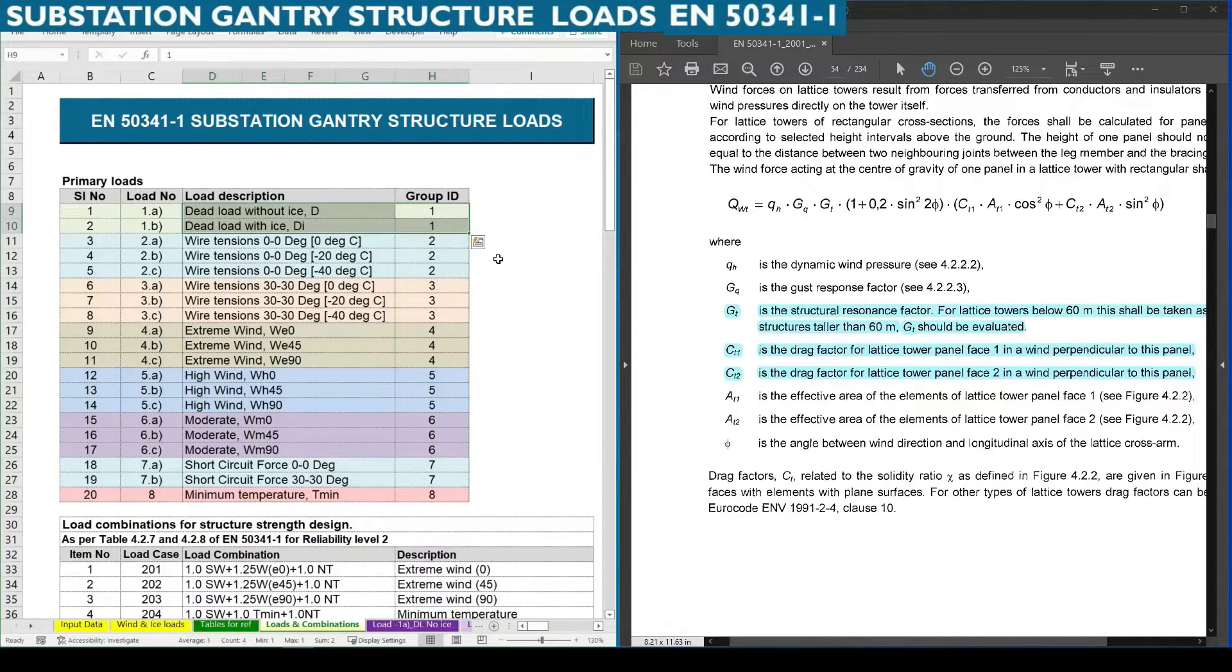1A is dead load without ice, another one is 1B dead load with ice. Next one is wire tension, this is nothing but the tension which is going to apply or which is going to form in the conductor and the earth wire, where the conductor used to connect in girder and earth wire is fixed on the top of the tower.